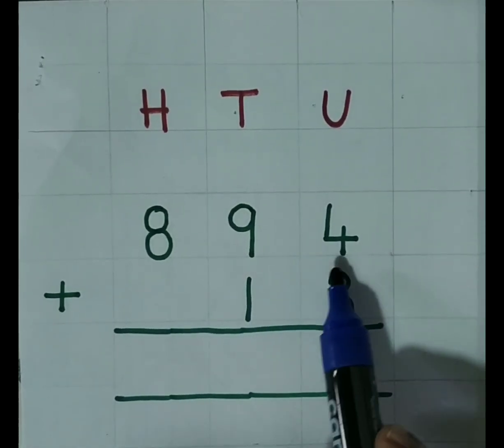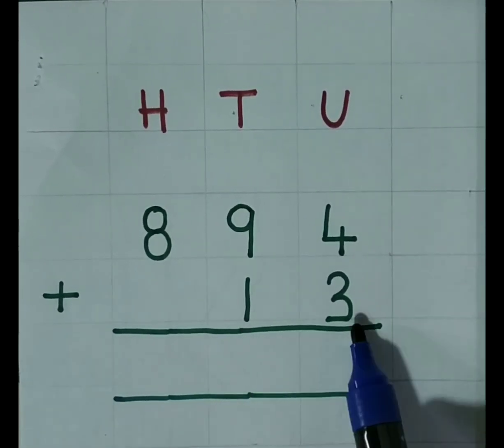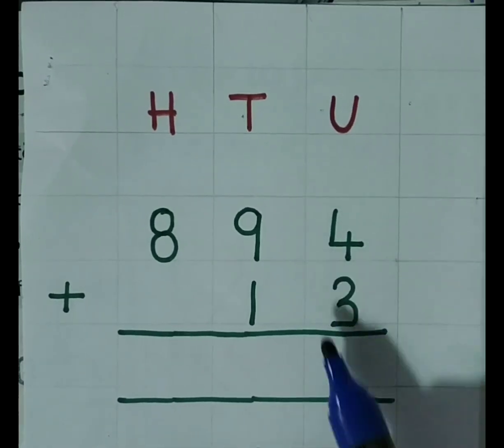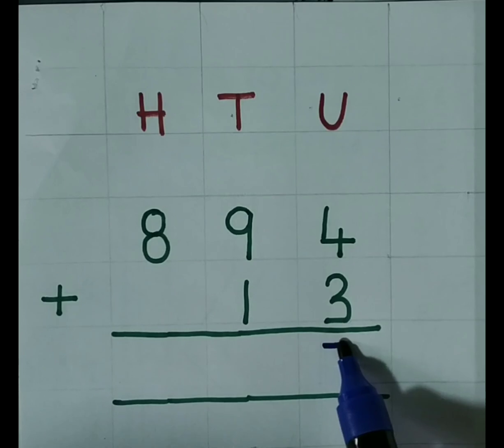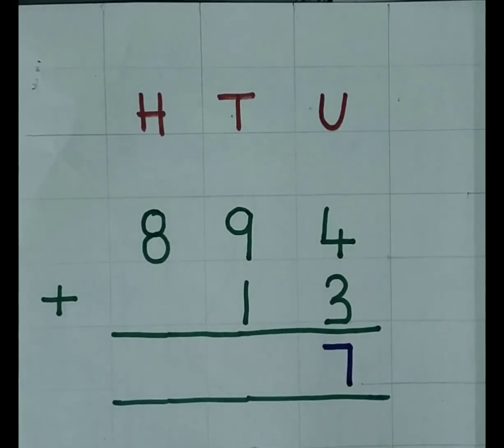894 plus 13. We have to start from the unit place. 4 plus 3, 7.